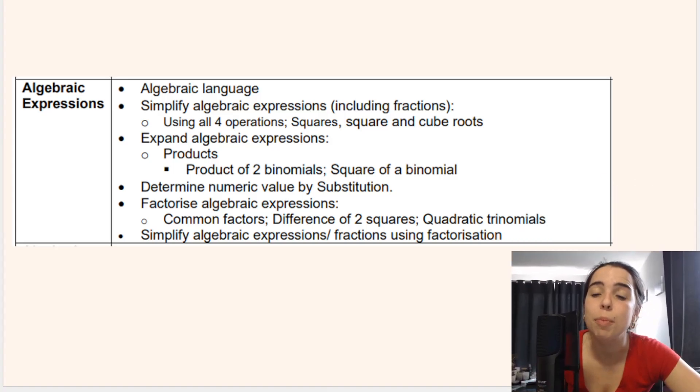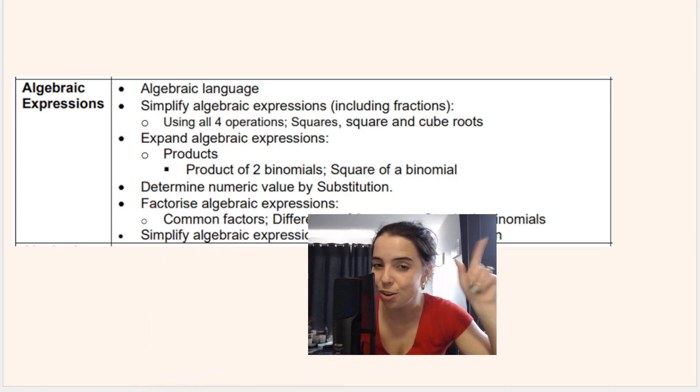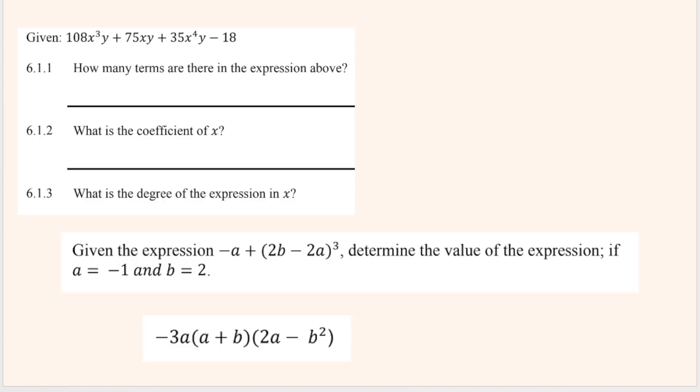Then we've got algebraic expressions. So our second big part of algebra, this is quite a big part. You have to know how to simplify. You need to know how to do products, binomials, squaring a binomial. Some teachers call it the foil method. You need to know how to factorize. I do have videos on factorizing on my channel. I also have videos going over exam papers for this. So check it out.